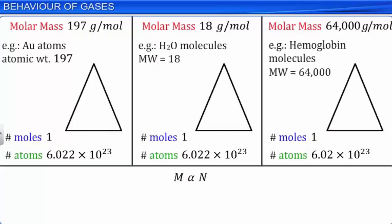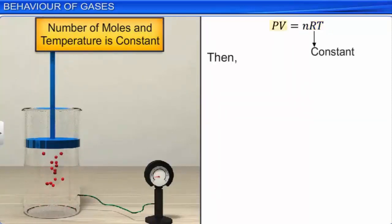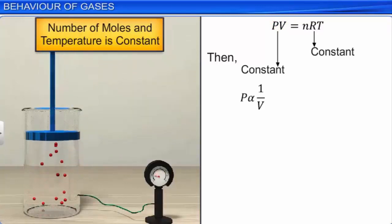As the mass of a given gas M increases, the number of molecules N also increases — that is, M is directly proportional to N. A mass of one mole of a gas is called molar mass, denoted by M0. It contains Avogadro's number of molecules N_A. Then M/M0 = N/N_A. If the number of moles and temperature are constant in the ideal gas equation, then PV is constant — that is, for a given mass of gas at constant temperature, pressure is inversely proportional to its volume. This is called Boyle's law.